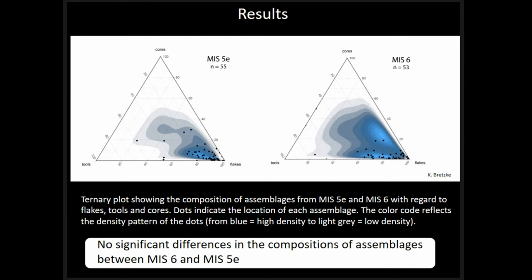Ternary plots show the composition of assemblages from MIS-5E and MIS-6 with regard to flakes, tools, and cores. Each dot indicates the location of an assemblage; color reflects density patterns from blue (high density) to light gray (low density). Though there are some slight differences between the two illustrations, there is no real significant difference in the composition of assemblages between MIS-6 and MIS-5E — this does not reflect the expected differences when using tool-core-flake ratios.